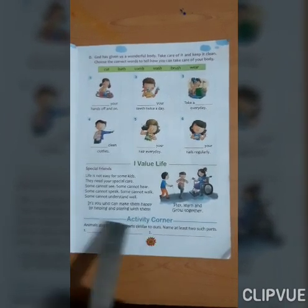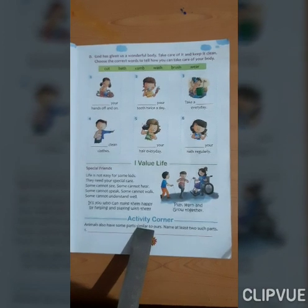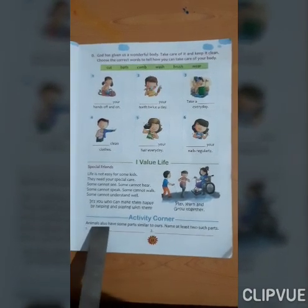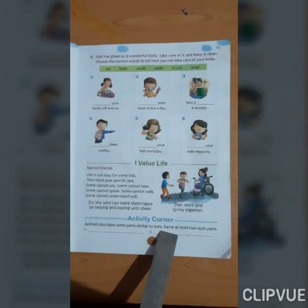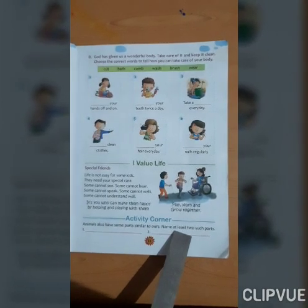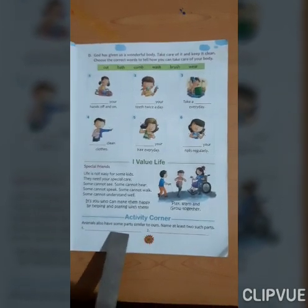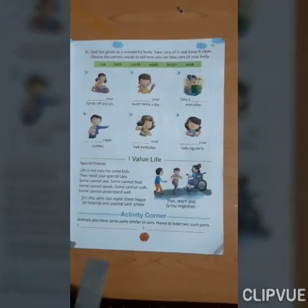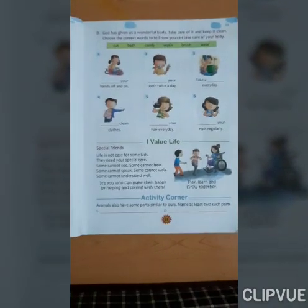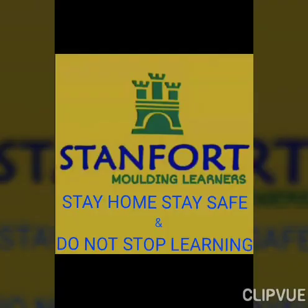Activity Corner: Kids, animals also have some body parts similar to ours. Name at least two such body parts that animals have in common with us and write them here. Okay kids, this chapter is over. Thank you, goodbye, and have a nice day!